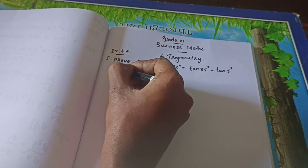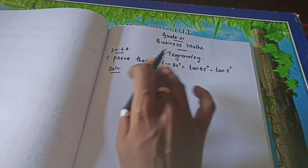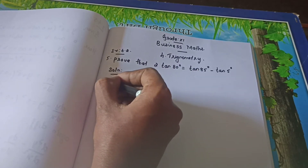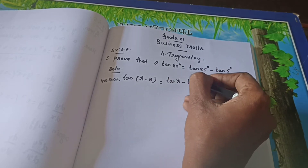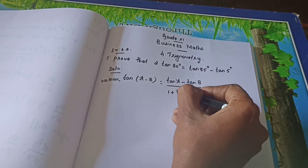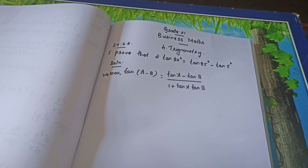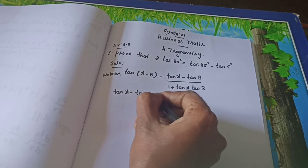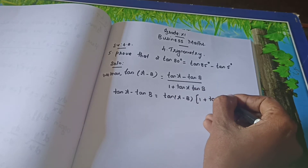Solution. First we are going to write the formula for tan(a - b). Why we are using tan(a - b)? Because here it is tan a minus tan b — that term we need. So we can write the formula: tan(a - b) equals tan a minus tan b divided by 1 plus tan a tan b. So you need the value for tan a minus tan b. Bring this to this side: tan a minus tan b equals tan(a - b) into 1 plus tan a tan b.